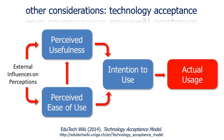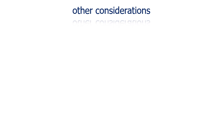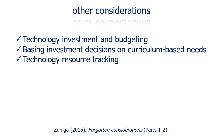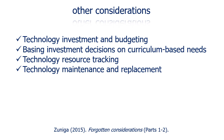Despite your best laid plans, there are always other considerations and bigger picture issues that could affect your proposed educational technology integrations. Not the least of which is the likelihood that your target users will actually adopt the proposed tools. The Technology Acceptance Model tells us that our intentions to use technology tools are shaped by our perceptions of how useful the tool is and how easy it is to actually use. So if you're having a hard time achieving uptake of a new tool, you may need to consider how your learners or other faculty perceive those technologies and what external influences are creating those perceptions. Zediga also points to other forgotten considerations, including budgeting and investment in educational technology resources, the importance of basing investment decisions on curriculum-based needs, the ongoing organizational need to track educational technology resources, and the inevitable need for ongoing technology maintenance and replacement.